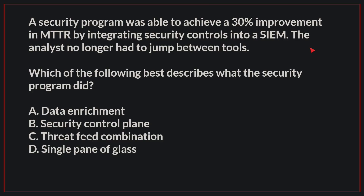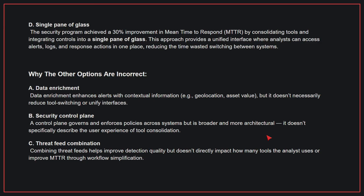A security program was able to achieve a 30% improvement in MTTR by integrating security controls into a SIEM. The analyst no longer had to jump between tools. Which of the following best describes what the security program did? The correct answer is D: Single pane of glass. The security program achieved a 30% improvement in MTTR by consolidating tools and integrating controls into a single pane of glass.